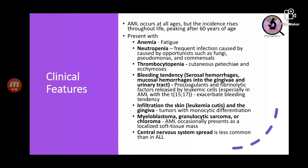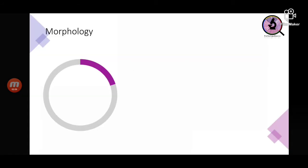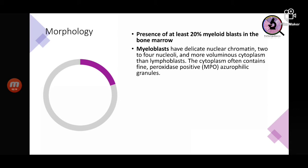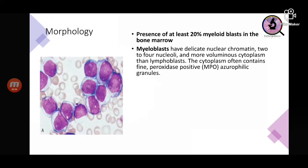Central nervous system spread is less common in AML; it is more common in acute lymphocytic leukemia. Regarding the morphology of AML, the basic criteria is there should be at least 20 percent or more myeloid blasts in the bone marrow. In the peripheral blood, myeloblasts may be present in less than 20 percent, but if you see myeloblasts in the peripheral blood it is always advisable to do a bone marrow examination.